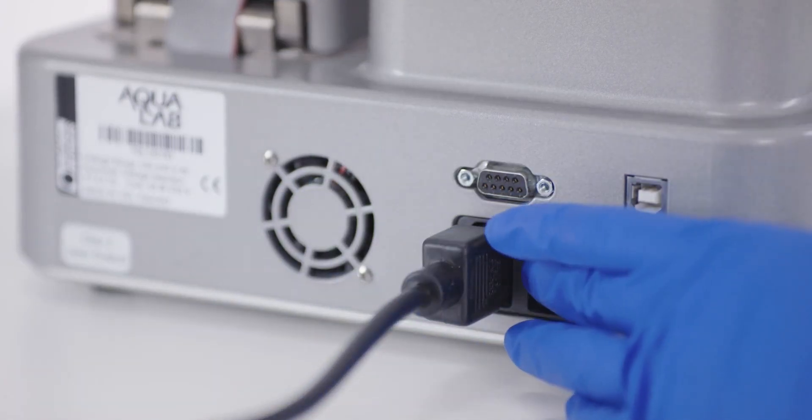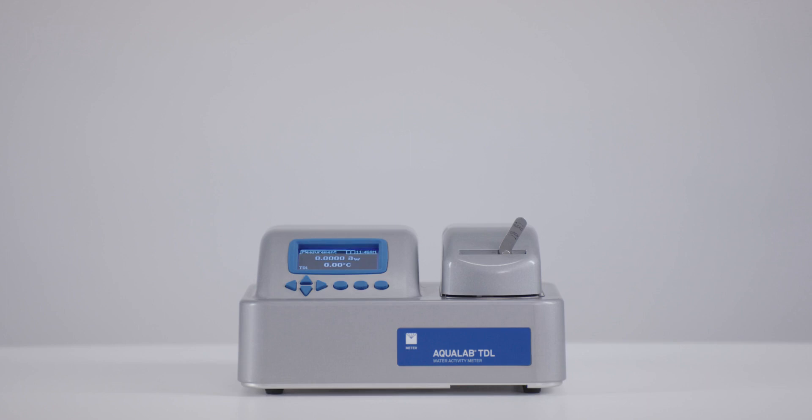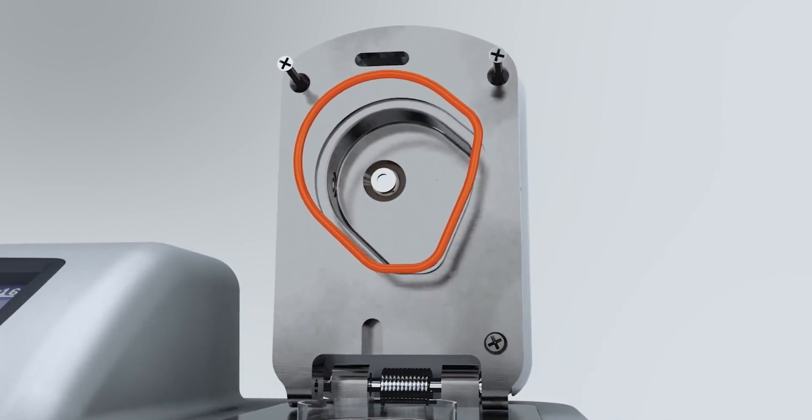Plug in the TDL and turn it on. The TDL uses a tunable diode laser to measure water activity. To understand how it works, let's look at the inside of the sample chamber.